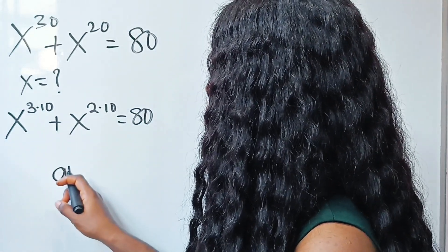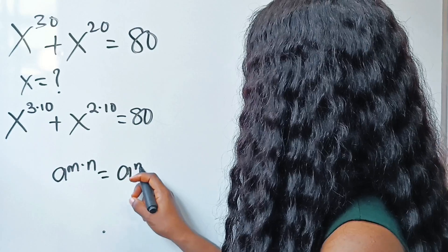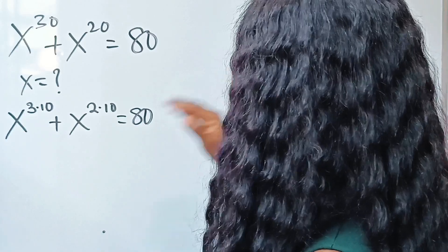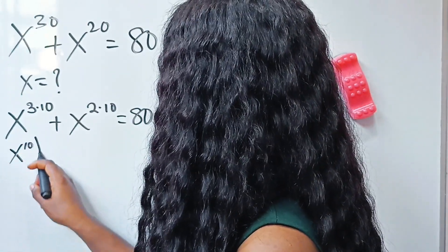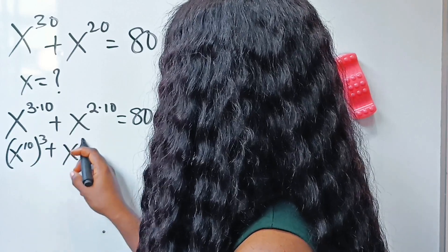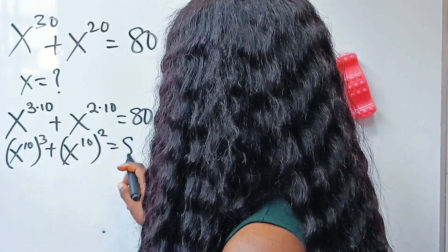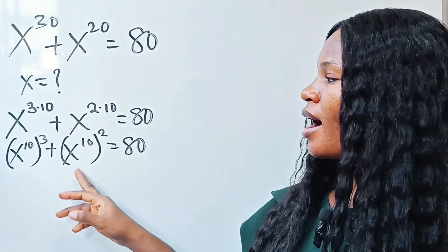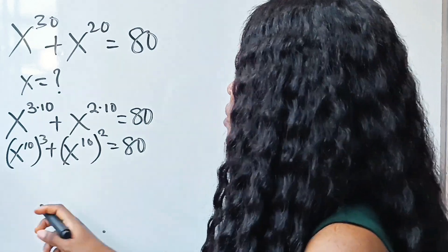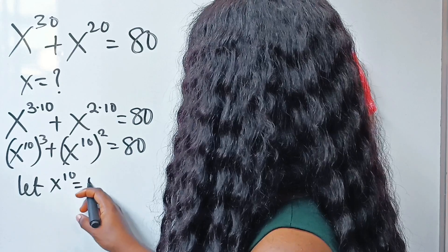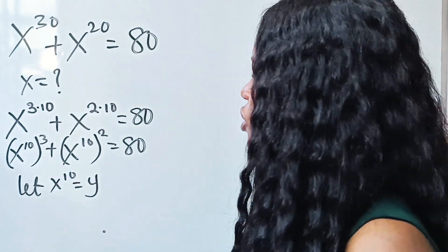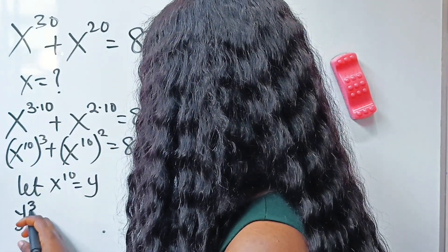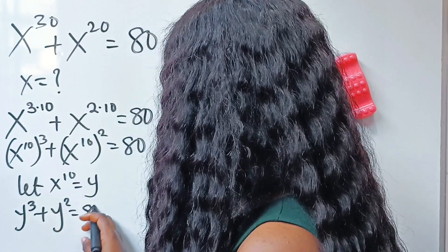Note that a to the power of m multiplied by n is equal to a to the power of m raised to the power of n. So that means I can write this as x to the power of 10 raised to the power of 3, plus x to the power of 10 raised to the power of 2, is equal to 80. We have the same base here and here, so let x to the power of 10 be equal to y. That simplifies the equation to y to the power of 3 plus y squared is equal to 80.